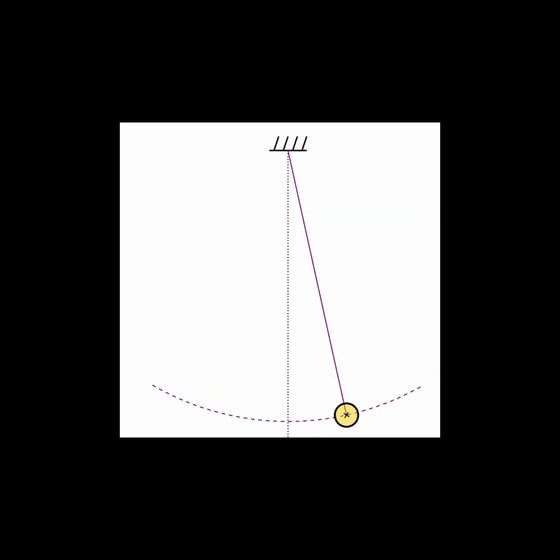Why is this cesium-133 atom and its energy levels so important for defining a second? Why not pick some other apparatus, like a swinging pendulum?